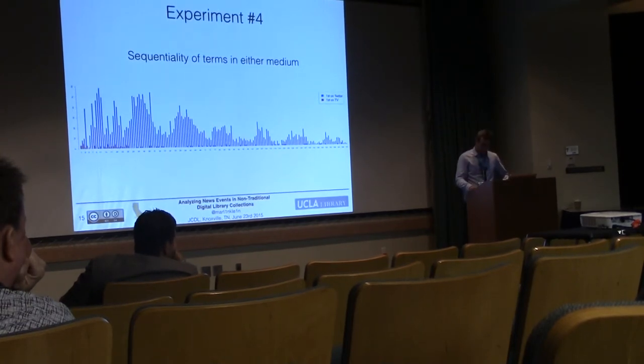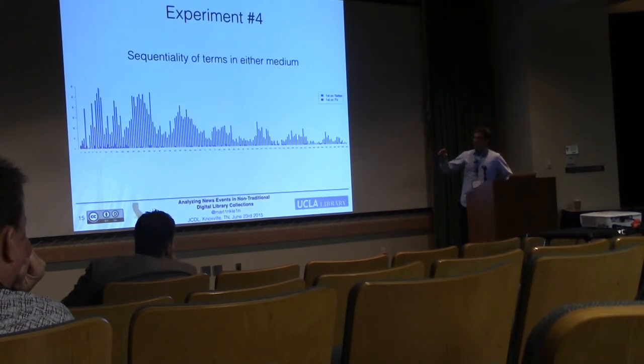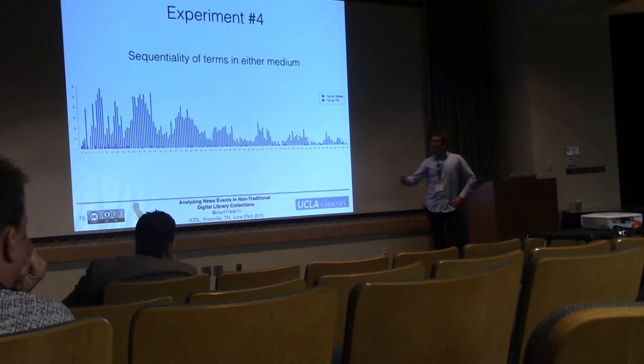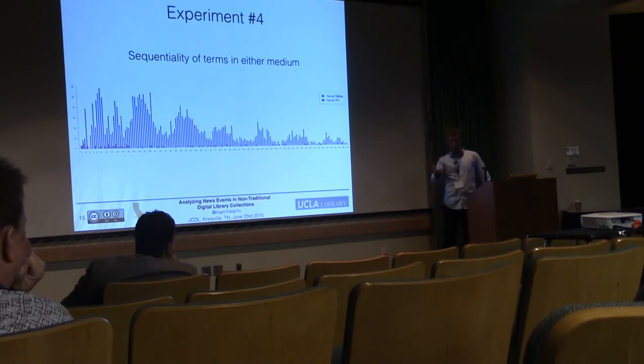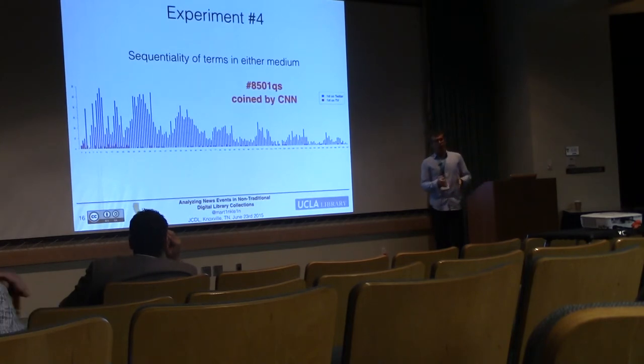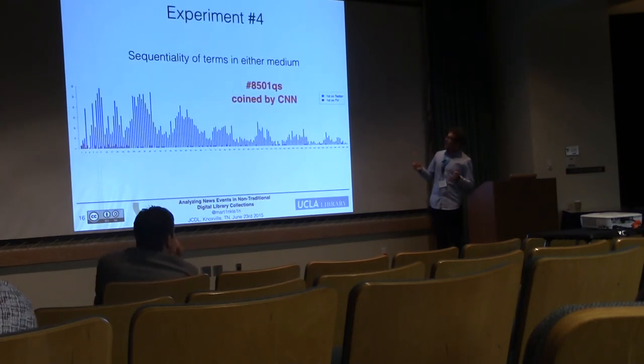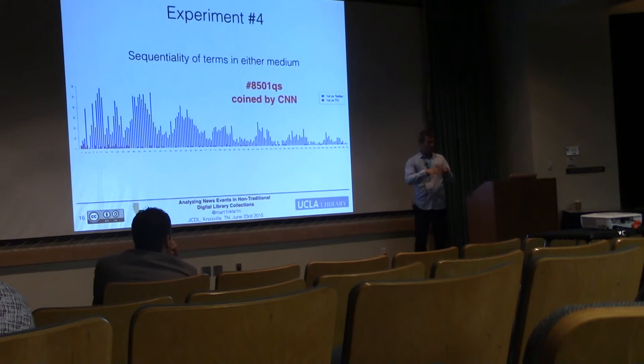One interesting aspect is there's hardly anything coined on TV first that makes it to Twitter. One example is Costello—a popular CNN anchor. At some point Twitter realized there's some CNN anchor, so maybe we should mention her name. The most amusing fact is the hashtag that occurred on TV first and then on Twitter. When I saw that, I thought there was something wrong with our analysis, but no. The hashtag 8501QS was not coined on Twitter—it was coined by CNN, where news anchors asked the audience to send questions using this hashtag, and then people did. That's another example of how these completely disjoined media influence each other and overlap.